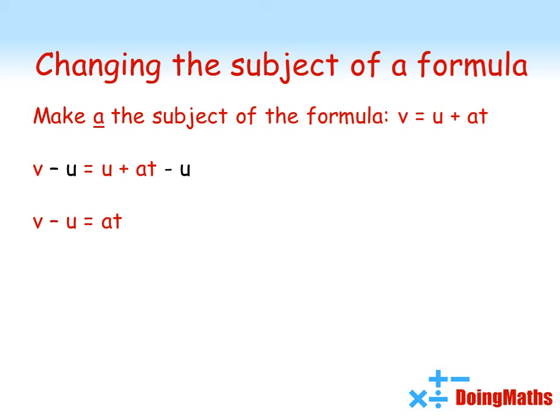We're a step closer to having A by itself but we've still got that T there. That's A multiplied by T so to get rid of it we'll do the opposite. We're going to divide both sides by T which gives us V minus U all divided by T equals A. Switching it round so that the A is on the left, A is equal to V minus U all divided by T. A is now the subject because it's by itself on the left and doesn't appear at all in the right hand side.